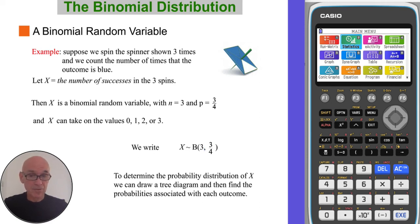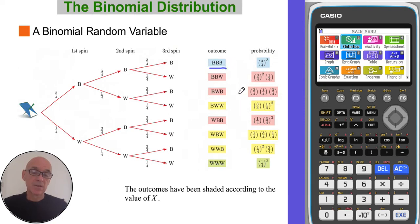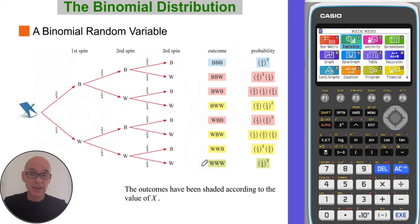To determine the probability distribution of X, we can draw a tree diagram and find the probabilities associated with each outcome. In the tree diagram shown, you can see the results of the three spins and the eight possible outcomes. The outcomes are shaded according to the value of X: the top branch is X equals three (blue outcome three times); the red results are X equals two (two blue outcomes); the yellow results are X equals one (one blue outcome); and the green at the bottom is X equals zero (no blue outcomes).